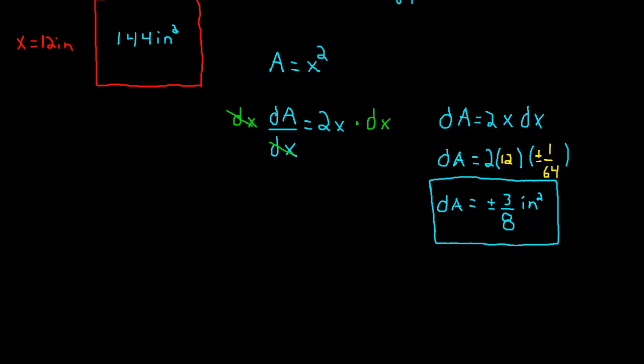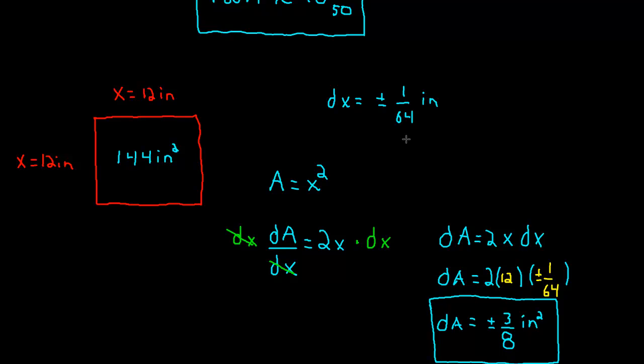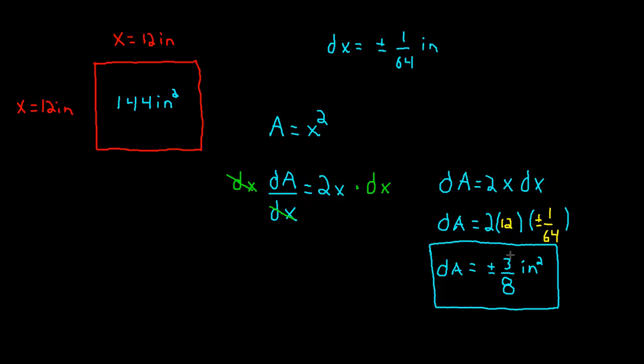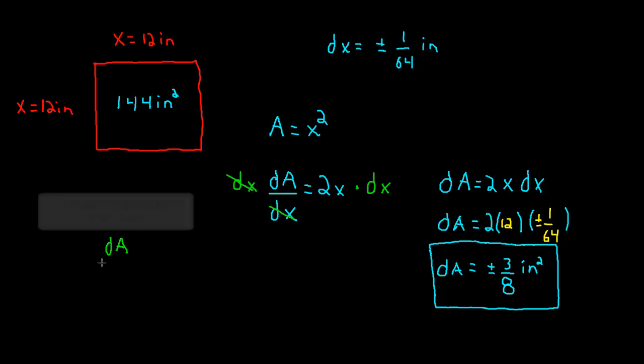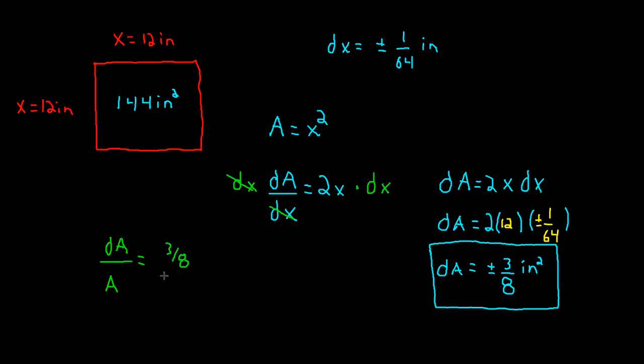But does that propagate too much of an error in our area? Well, we need to decide if that's good or bad. So the way we do that actually is pretty easy. Just divide a couple of numbers. And it turns out you take your propagated area, which is dA, and you divide it by what it's supposed to be. So you would take 3/8ths and divide it by the actual area.